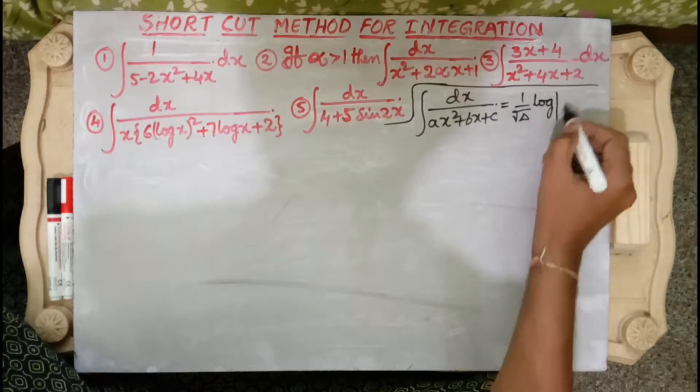Substituting back t equals tan x, the final answer is 1 by 6 times log mod (2 tan x plus 1) over (tan x plus 2) plus c. This is the solution for the last integral. In the previous video, the delta less than 0 formula was shown; here we applied the delta greater than 0 formula for all five problems. Please like, share with your friends, and subscribe. See you again, bye.